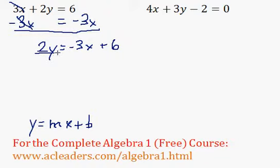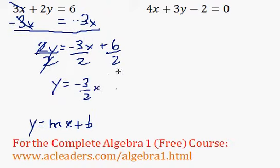Now I can divide both sides by 2, and y is equivalent to negative 3 over 2x plus 3. That means our slope is negative 3 over 2 in this case.